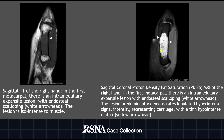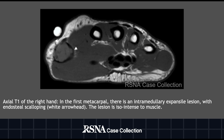Here we have two sagittal MRI images. The first is a T1 sequence and the second is a PD fat sat sequence. On the T1 sequence, the expansile first metacarpal lesion is predominantly isointense to muscle and the endosteal scalloping is clearly seen. On the PD fat sat sequence, the lesion is predominantly hyperintense in signal intensity representing cartilage, and the matrix is the hypointense thin curvilinear signal intensity between the cartilage. There's no cortical break or fluid-fluid level. Finally, we have an axial T1 MRI where the expansile first metacarpal lesion is predominantly isointense to muscle and the endosteal scalloping is clearly seen.